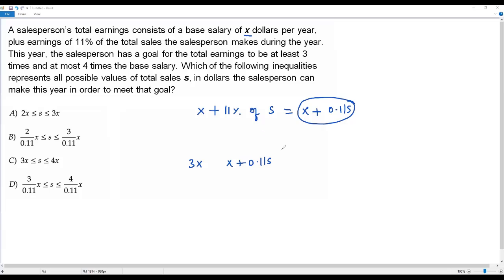So this total earnings, X plus 0.11S, the minimum value has to be 3X and the maximum value is 4X. So we write 3X less than or equal to X plus 0.11S less than or equal to 4X.